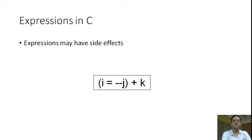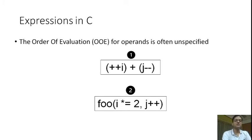This talk is about expressions in C and their evaluation. Expressions in C may have side effects. Consider this expression: i equals minus-minus j plus k. While this expression computes a value, it also involves two side effects — one on object j and another on object i. These side effects may be applied in either order and at non-deterministic times during the evaluation. Thus, the order of evaluation (OOE) of operands in an expression is often unspecified.